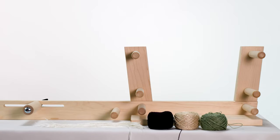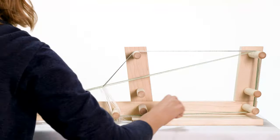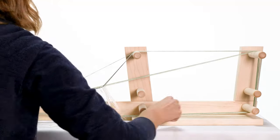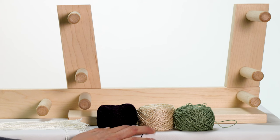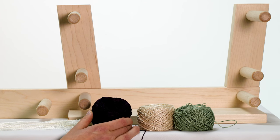For the warping process, you will need your inkle loom, tech solve or string heddles, yarn for warping, and scissors. I'm using 5-2 pearl cotton which is strong and smooth. It is a great yarn for inkle weaving.